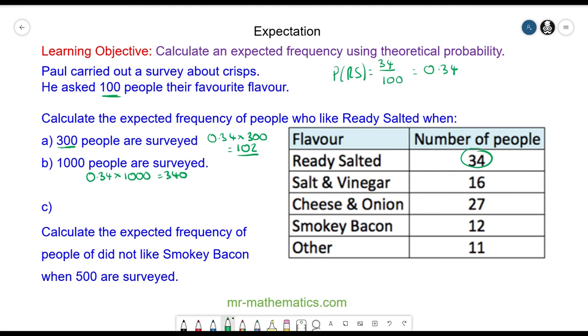To calculate the expected frequency of people who did not like Smoky Bacon when 500 were surveyed: we know 12 people did like Smoky Bacon, so the number that did not would be the sample takeaway the number that did, which is 88 people. So the probability of not Smoky Bacon would be 88 divided by the sample of 100, which is 0.88 as a decimal.